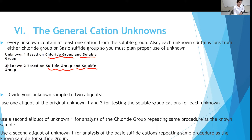The pre-lab for this unknown sample asks you to follow the lab manual. I already have two sample flowcharts — one for the chloride group and one for the sulfide group. You are going to design a flowchart: one for unknown one and one for unknown two, and you will submit these flowcharts as the pre-lab assignment.